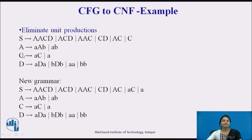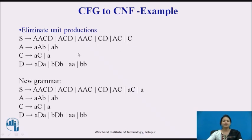Next is elimination of unit production. Searching the grammar, we find that C is a unit production in the start symbol S — that is the only unit production. By substituting the value of C (which is AC and A) wherever C appears in S, we eliminate the unit production C.